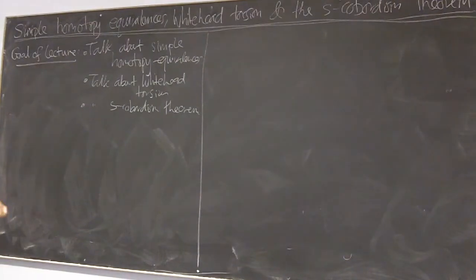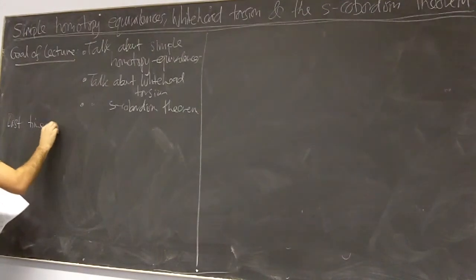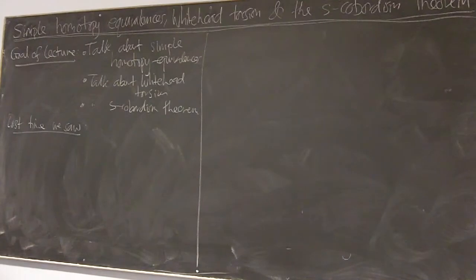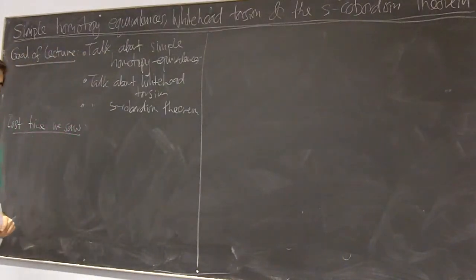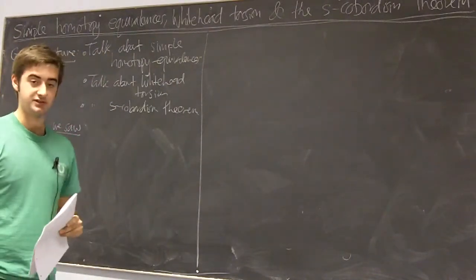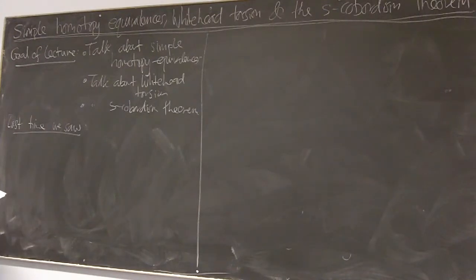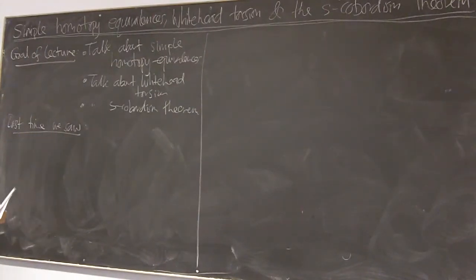So last time in Chris's lecture, we saw that in the setup of the conditions for the H-cobordism theorem, by sliding, creating, and cancelling handle pairs, we can eventually diagonalise our boundary operators δ_k, so that we can get plus or minus one down the diagonal.